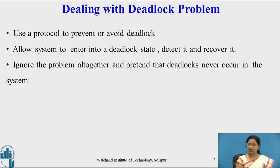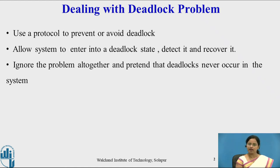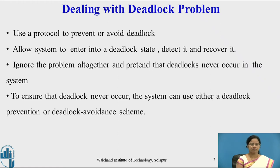These are the three cases for dealing with deadlock. First, either prevent or avoid. If you don't have a prevention and avoidance mechanism, then deadlock will occur. If it occurs, detect it and recover from it. Otherwise, ignore the problem and pretend deadlock never occurred. To ensure deadlock never occurs, the system can use either deadlock prevention or deadlock avoidance scheme.